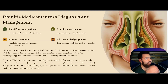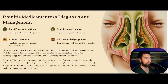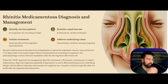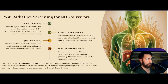Next, rhinitis medicamentosa. When patients use decongestants more than 3 to 5 days — which they should not — the chronic vasoconstriction causes reduced oxygen delivery to the nasal mucosa and sinuses, leading to paradoxical worsening of congestion. It can take about 2 to 6 weeks for resolution after decongestant discontinuation. To help, you can use intranasal steroids such as fluticasone or mometasone to reduce inflammation, taper the decongestant slowly, and add oral antihistamines for underlying allergic rhinitis.